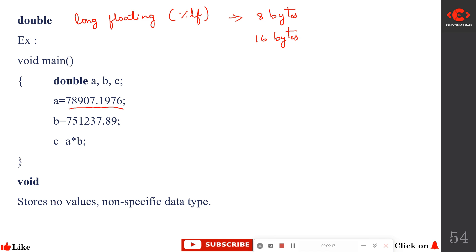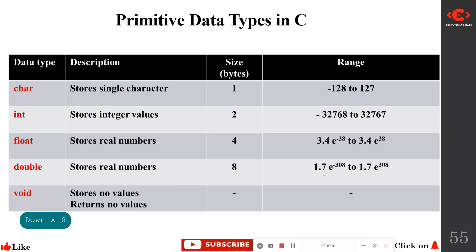Void is an empty data type. It is called empty because no value is associated with it and it does not occupy any space in memory. Void is generally used to indicate that a particular function does not return any value. The size of void is 0 regardless of whether it is a 16-bit, 32-bit, or 64-bit machine.